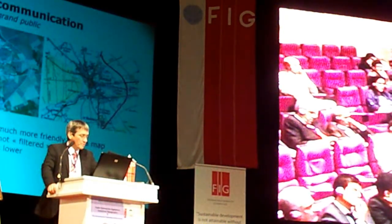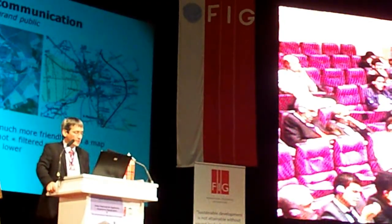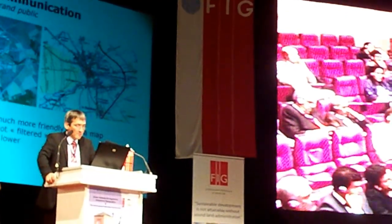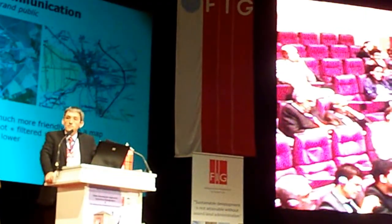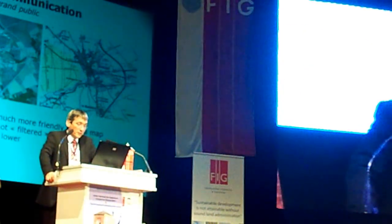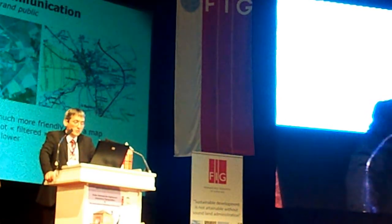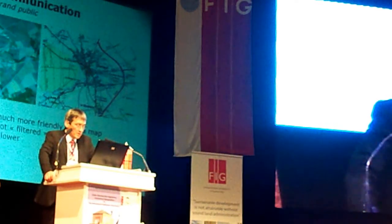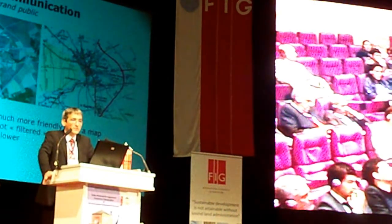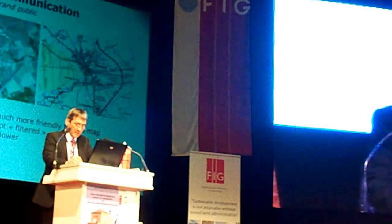The second example is the use of image information for communication with the general public. Several reasons explain this potential: an orthoimage is generally much more user-friendly than a map and requires very limited technical skill. The information is not filtered by any specific interpretation, and the cost per square kilometer is often much lower. The consequence is the great potential of remote sensing imagery to communicate with non-expert partners and the general public about land management projects.